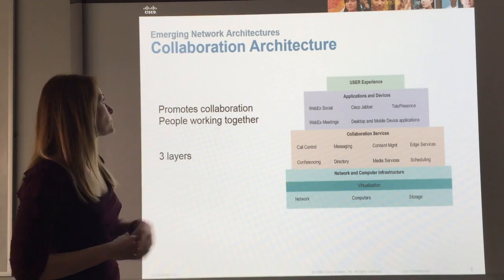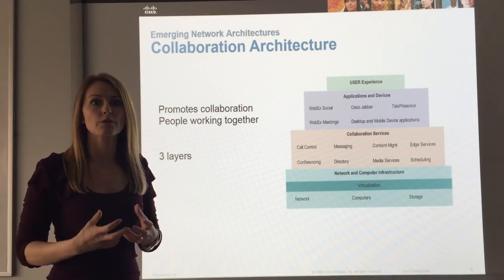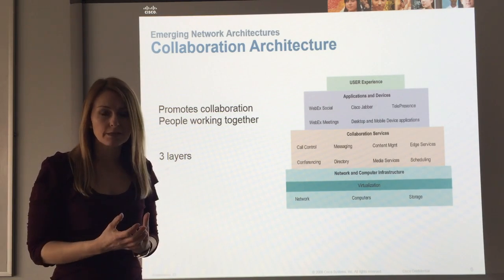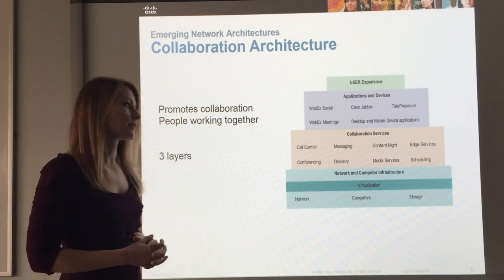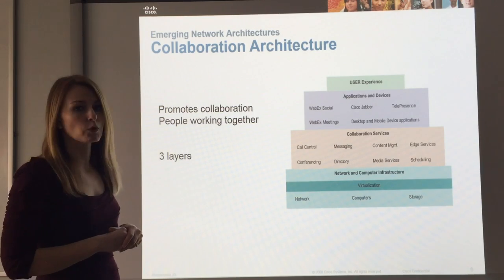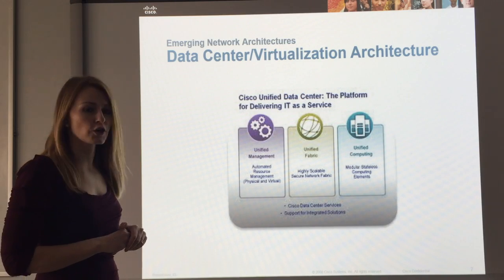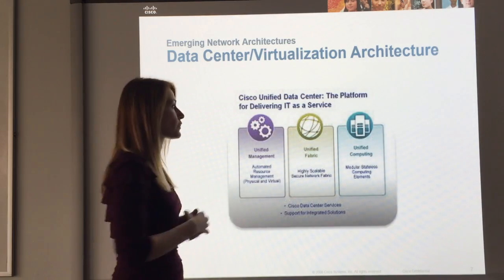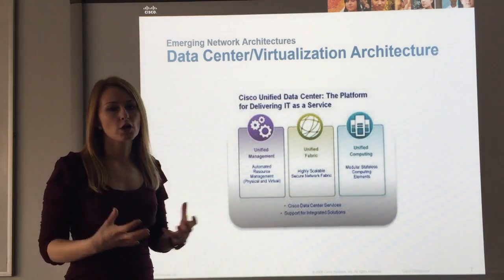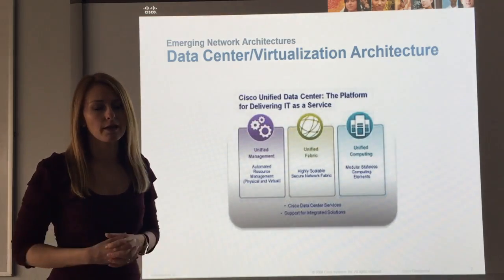Here is an example of the collaboration architecture. We want to promote people being able to work together - collaborative group activities. In order to accommodate this, we use a three-tiered architecture that promotes collaboration. And finally we've got the data center virtualization architecture, which is also a three-module architecture that will allow the accommodation of virtualization and large data centers.